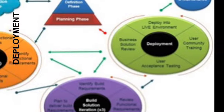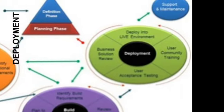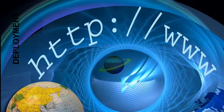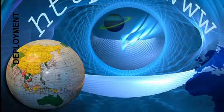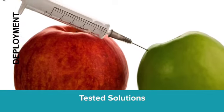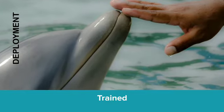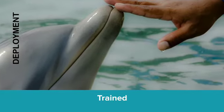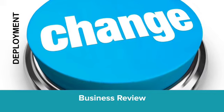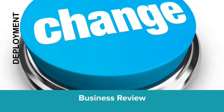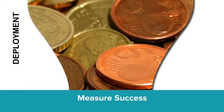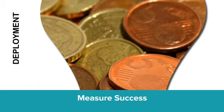The deployment iteration phase is about placing the new business solution in the user's environment. Make sure the business solution has been reviewed and accepted, that users are well trained, and that the new business solution is properly deployed into the live environment. Before moving to the next increment, check whether the business requirements have changed. Measure the increment's success against business benefits.